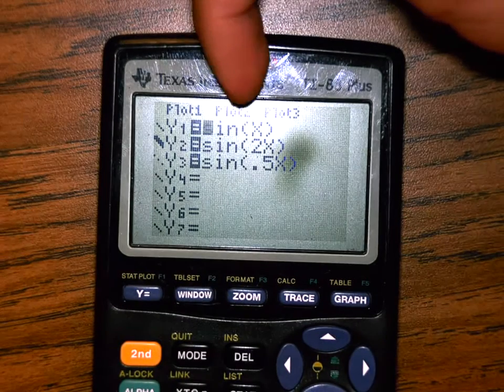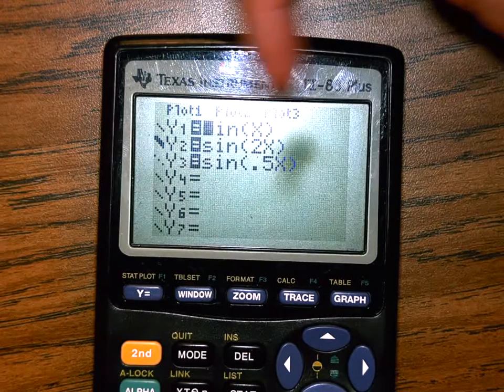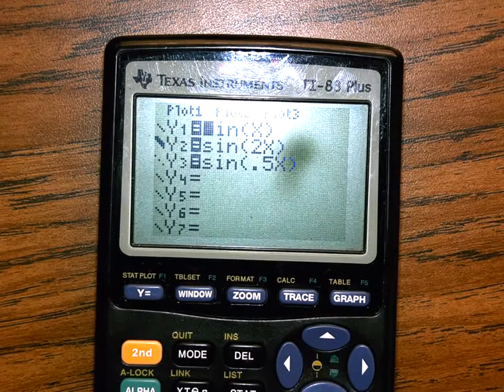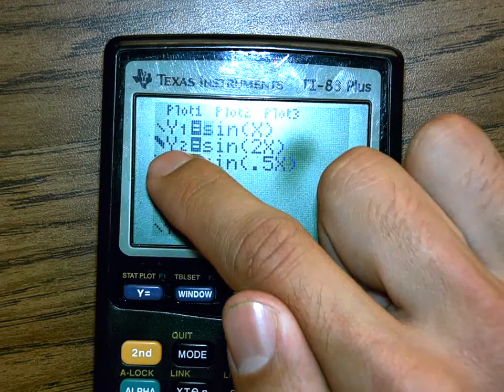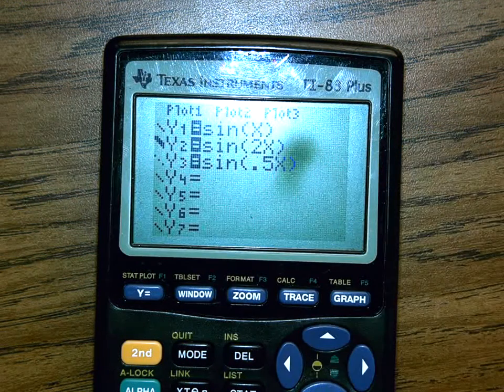Making sure that, see how plot one, plot two, plot three, that they are not highlighted. They need to not be highlighted. And I have this one lighter, this one darker, and this one dotted so I know which one is which.